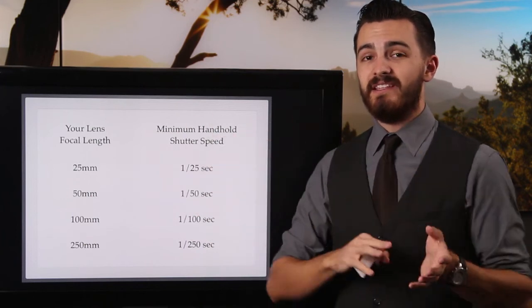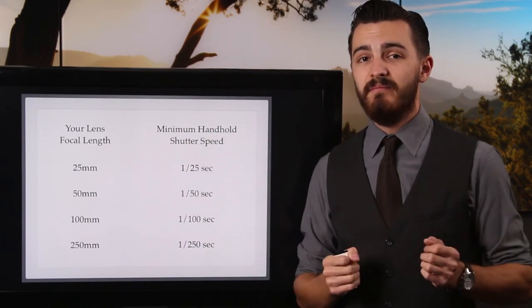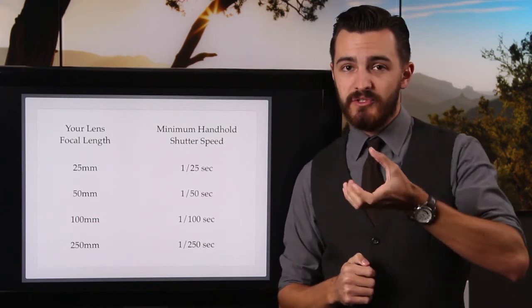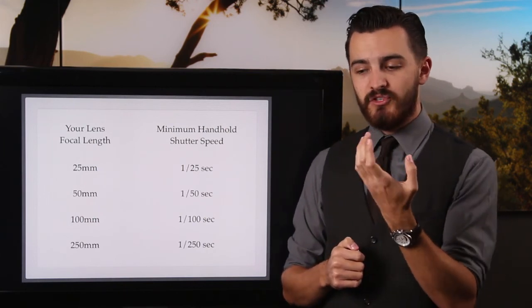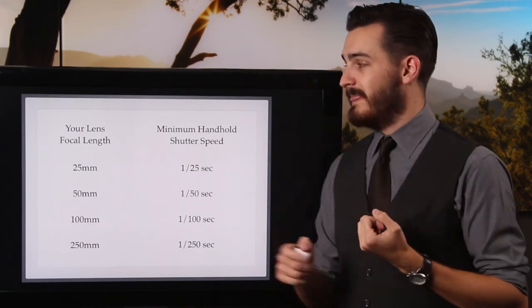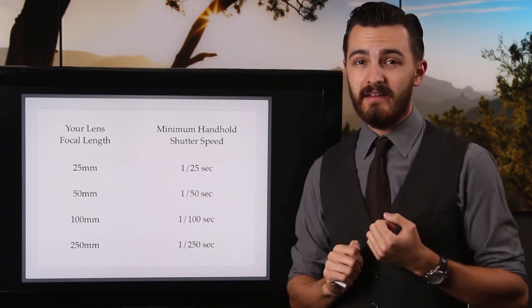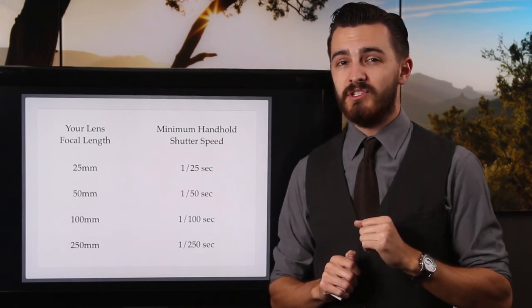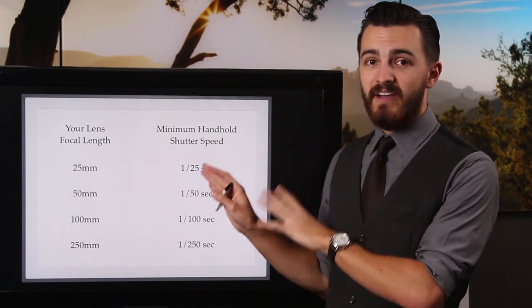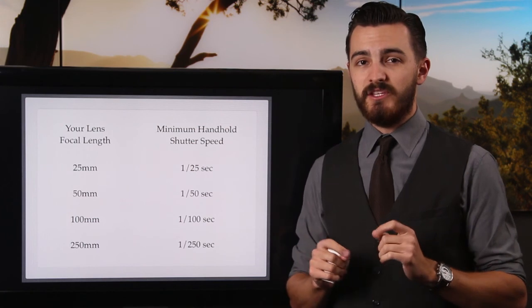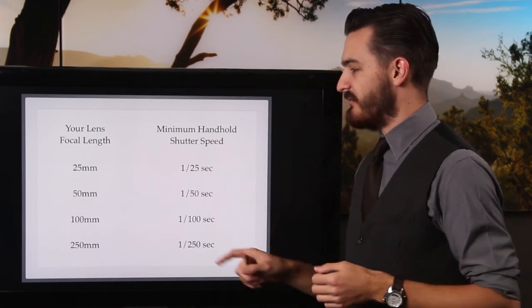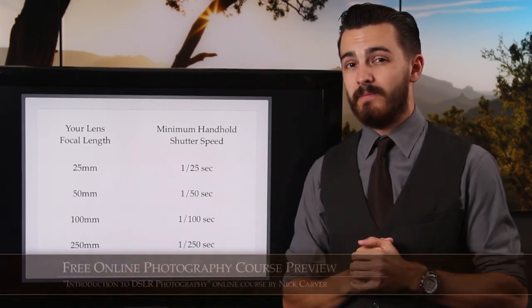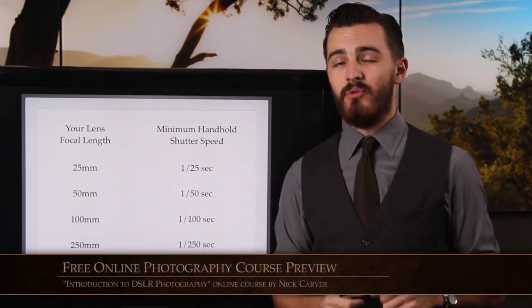If you have a zoom lens with a range of say 18mm to 55mm, wherever you zoom it to you still follow this rule. If you zoom to 24mm, you need at least 1/24th of a second. If you zoom in to 55mm, you need at least 1/55th — so the closest would be 1/60th. You can always go faster, which just means you'll freeze your camera shake that much better. For instance, with a 100mm lens I try to get well above 1/100th — more like 1/200th or 1/250th. But if you follow this rule of thumb, you'll get a lot more sharp photos.